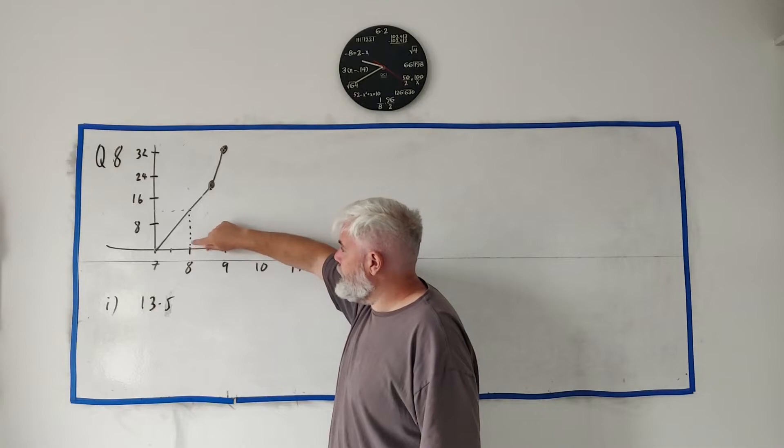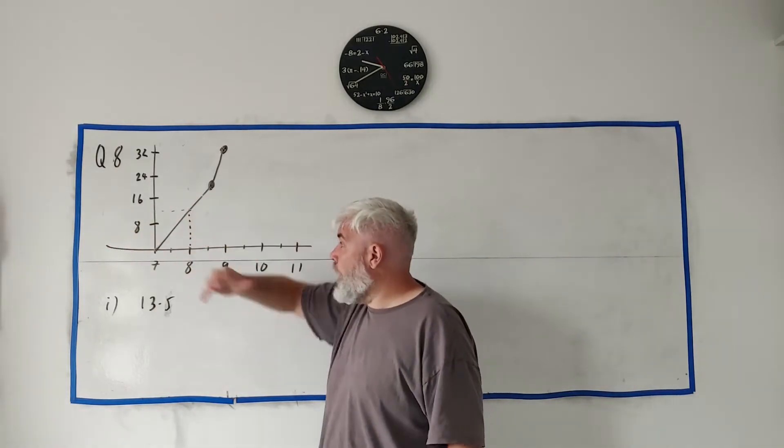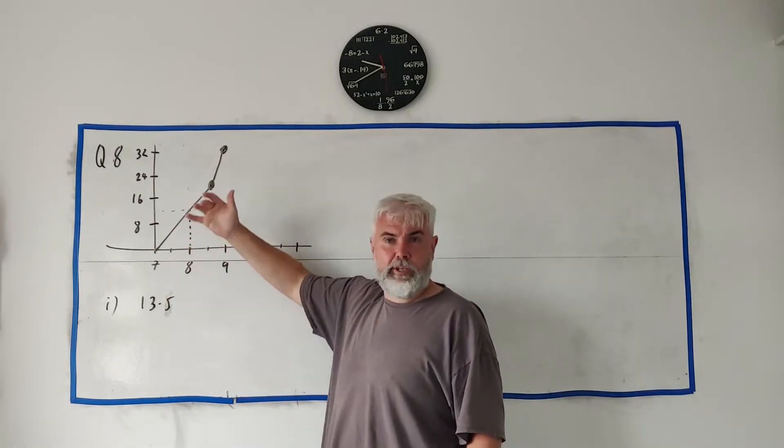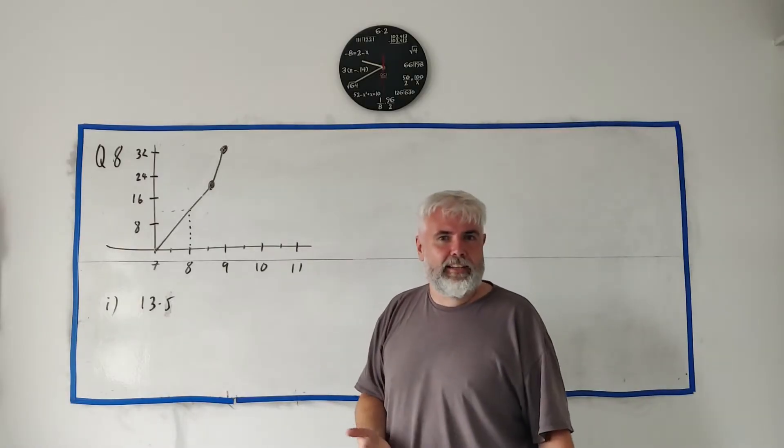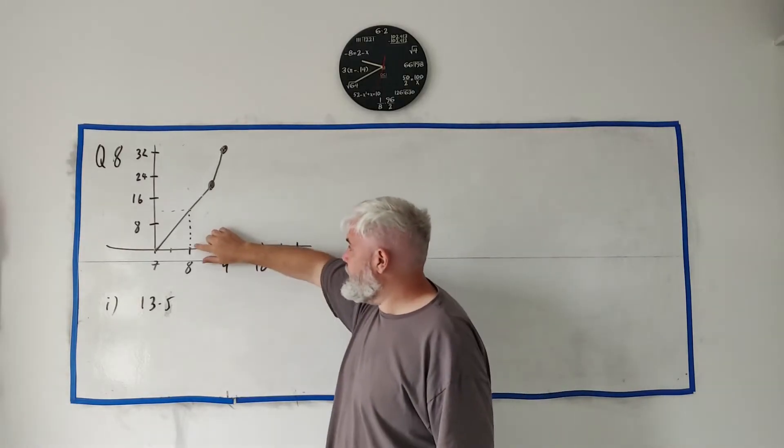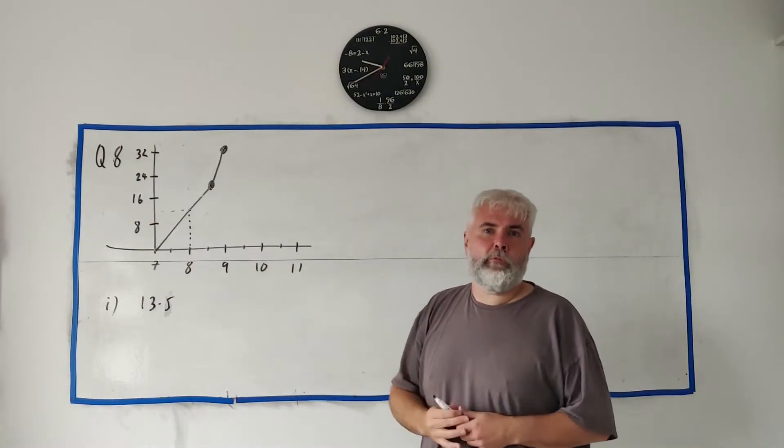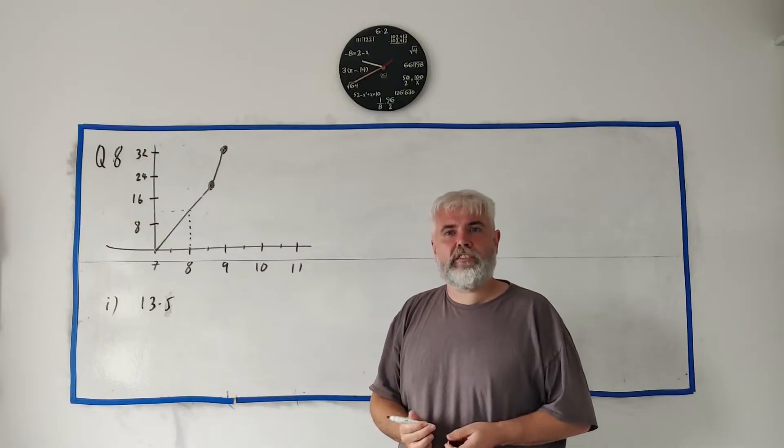What they're really looking for is your method, how you got the number. So what they're really looking for is some sort of dotted line like this to show the examiner what you were thinking. I know that you don't need a dotted line because there's already a line on the page, but the examiner can't see what you're thinking. This shows them what you're thinking. That's all we really need to do.